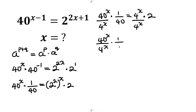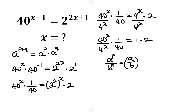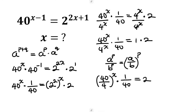We apply the index law that says a^p over b^p equals (a/b)^p. So 40^x over 4^x becomes (40/4)^x, which is 10^x. The right side simplifies to 1 times 2, giving us 10^x times (1/40) equals 2.